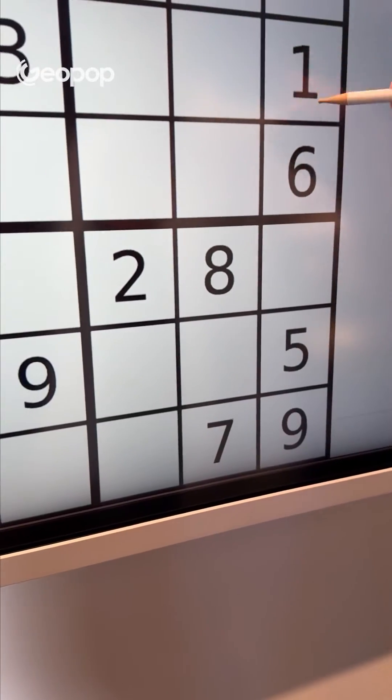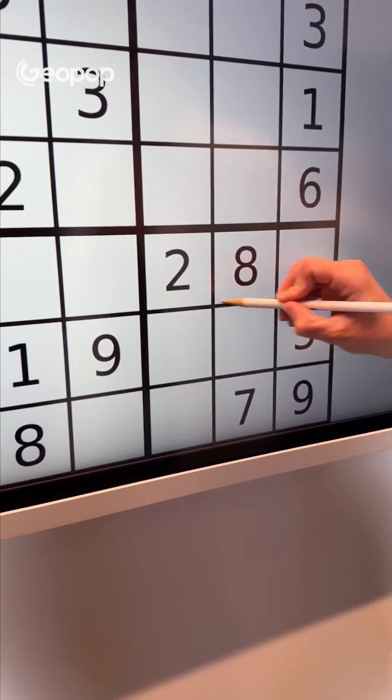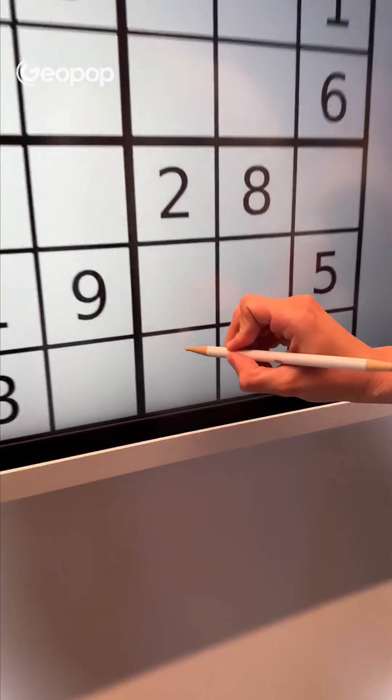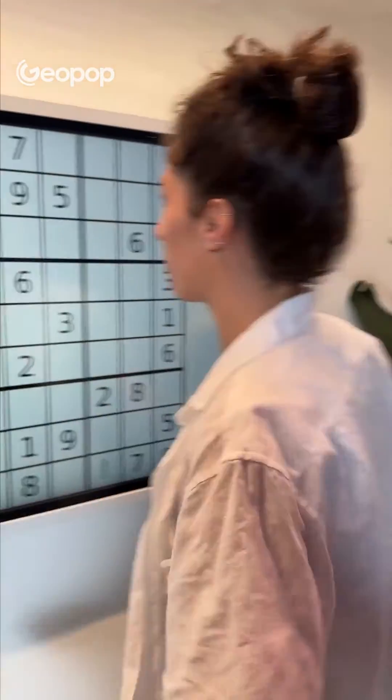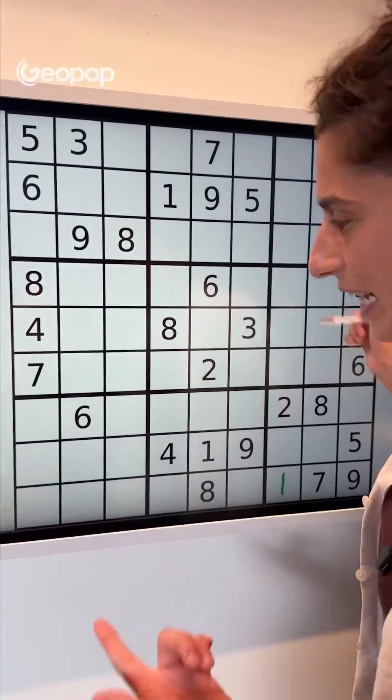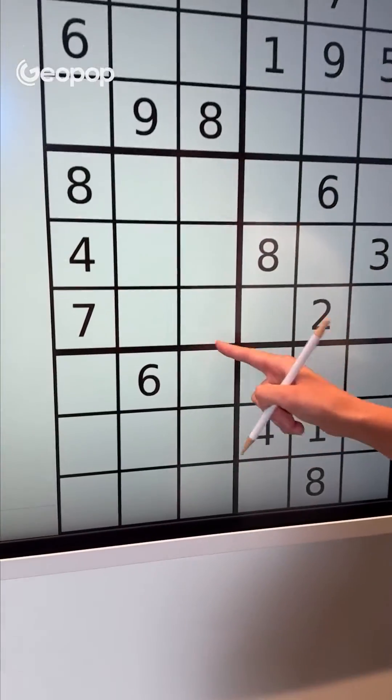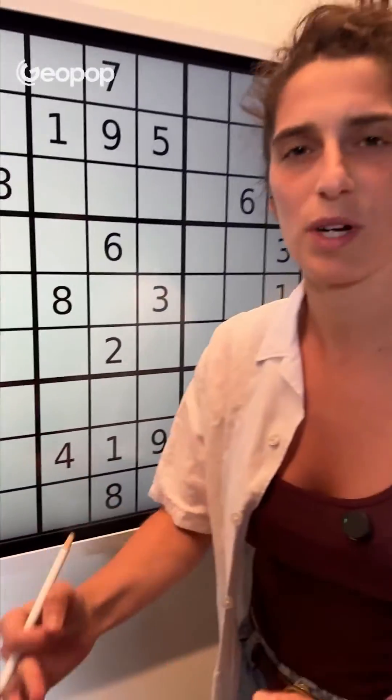The 1 can't go here because it already appears in this column, and it can't go here because it already appears in this row. So the 1 must go here. The Sudoku season has officially begun, and while these puzzles may sometimes seem impossible, there are strategies and techniques you can use to solve them. And no, don't worry. Knowing these techniques doesn't mean cheating. On the contrary, understanding them will make you reason better and stimulate your brain.